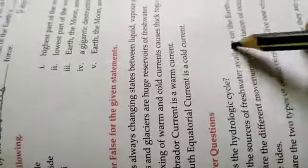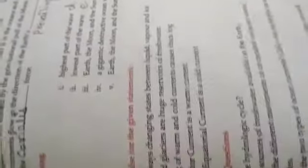Your homework assignment has three questions: Name the sources of fresh water available on earth. What are the different movements of circulation of ocean water? Define tides. Thank you.